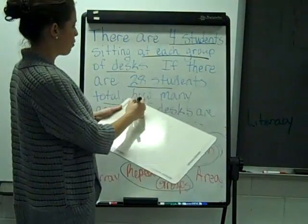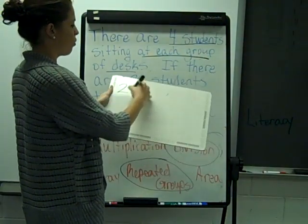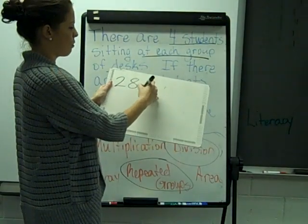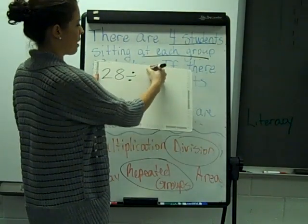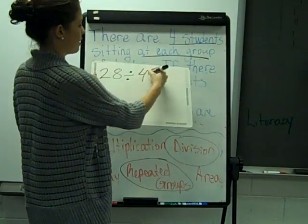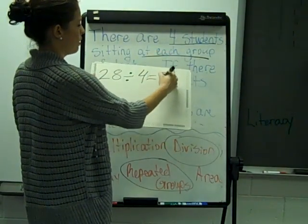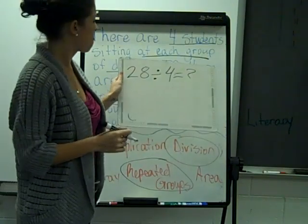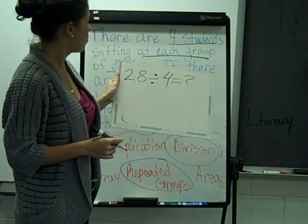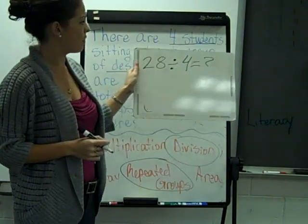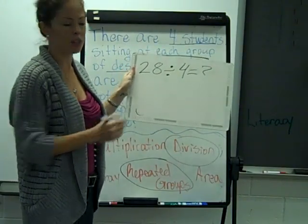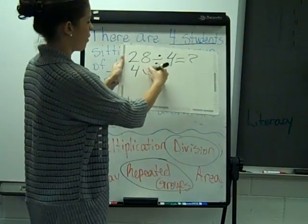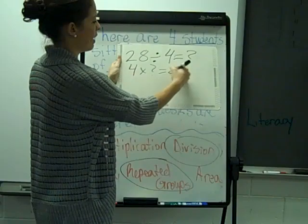So that equation would be how many students total are in the class — 28 — divided by the four students at each group, with a question mark for how many groups there are. Well, if you don't know what 28 divided by 4 is, you can relate it to multiplication: 4 times what will give you 28?